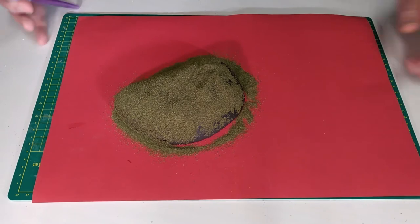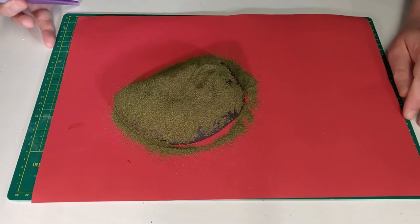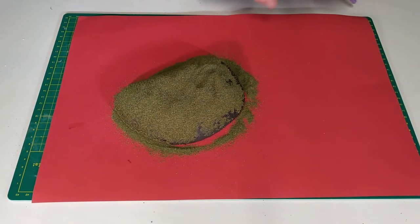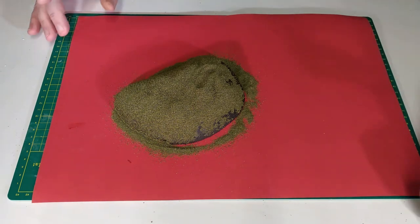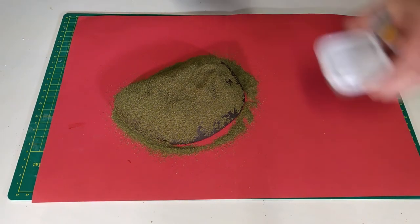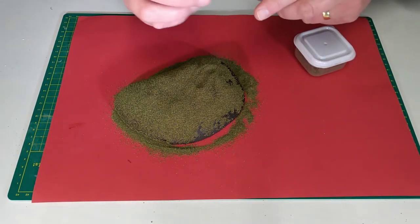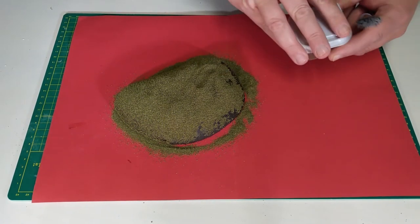It's been a few hours and the glue is now dry. Now it's time to remove the excess flock. On this occasion I'm going to pick it up, turn it over, and give it a gentle tap to dislodge any loose flock. You could also use a paintbrush to gently remove any remaining bits.